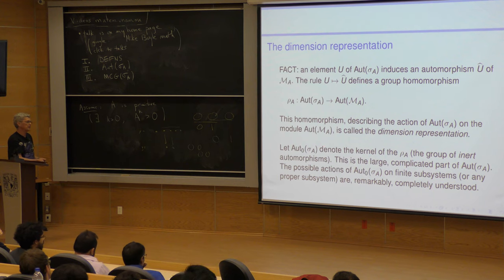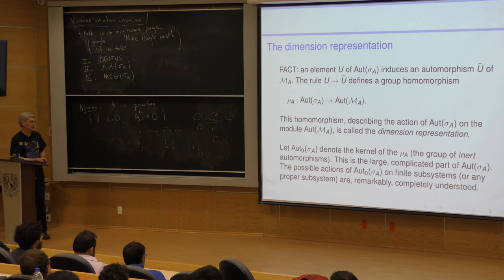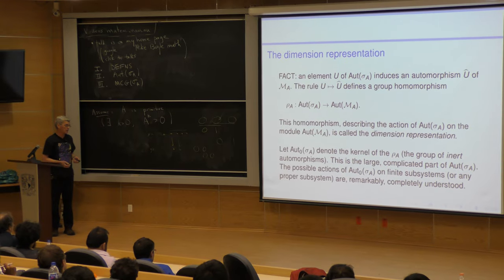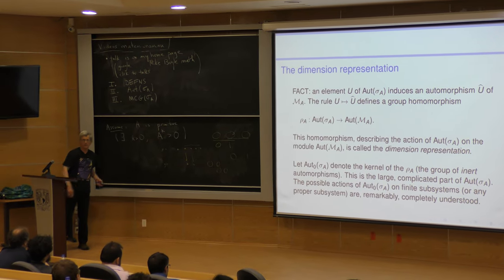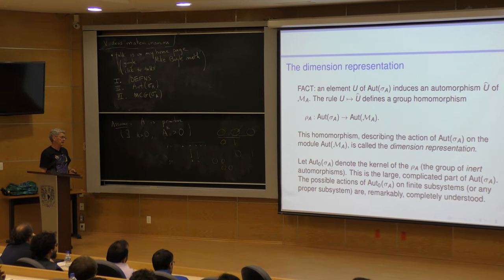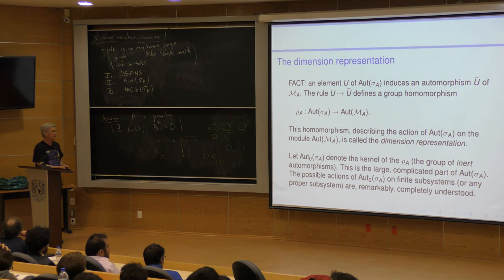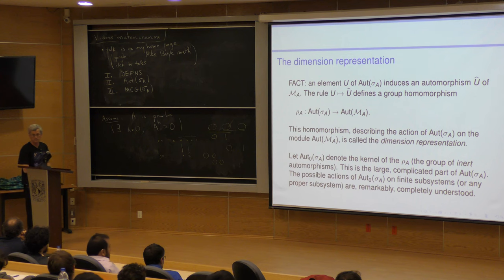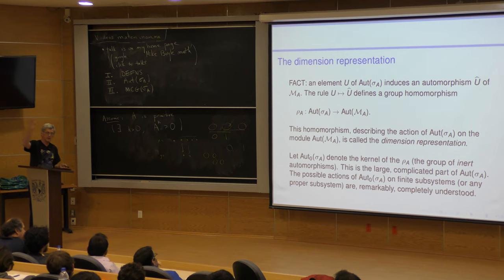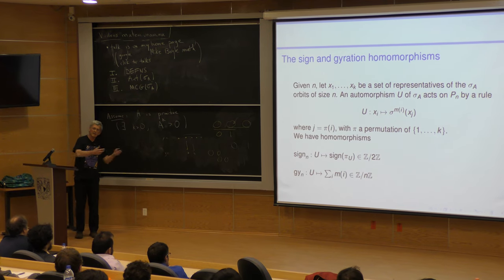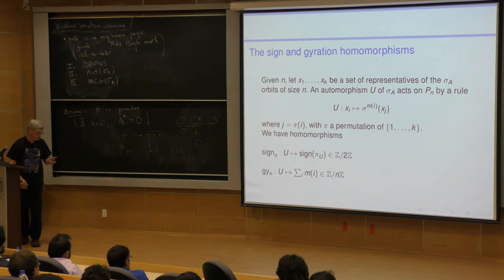Let Aut_0(sigma_A) denote the kernel of the dimension representation — the group of inert automorphisms. This is the large, complicated part of the automorphism group. This is where we build up all those marker automorphisms. We know a great deal about how this group can act on finite subsystems or any proper subsystem of the shift. Think of the group as: you have this algebraic part, and then you have the kernel — and that's where the mystery is.